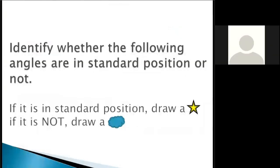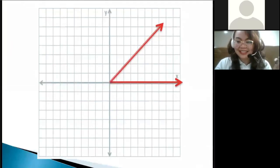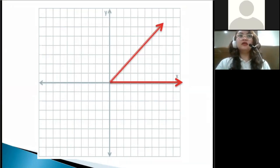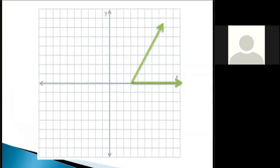Angles in standard position: two things to remember. Initial side must be on the positive of the x-axis. Vertex must be at the origin. The terminal side could be anywhere. Number your papers 1 to 6. Let's have your first set of items. Identify whether the following angles are in standard position or not. If it is in standard position, draw a star. If it is not, then draw a cloud. It should be fluffy. Identify whether the following angles are in standard position or not. Answer on your paper. Draw a star if it is in standard position, otherwise draw a cloud.